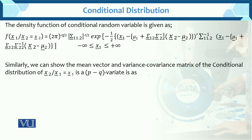Now the density function of the conditional random variable is defined as follows. This is the density function of the conditional distribution when x1 given x2. You know that the density function of the multivariate normal involves x minus mu — the mean — and the variance-covariance matrix. Here we have the conditional variance-covariance matrix. We have just defined the density function of the conditional distribution here without proof.